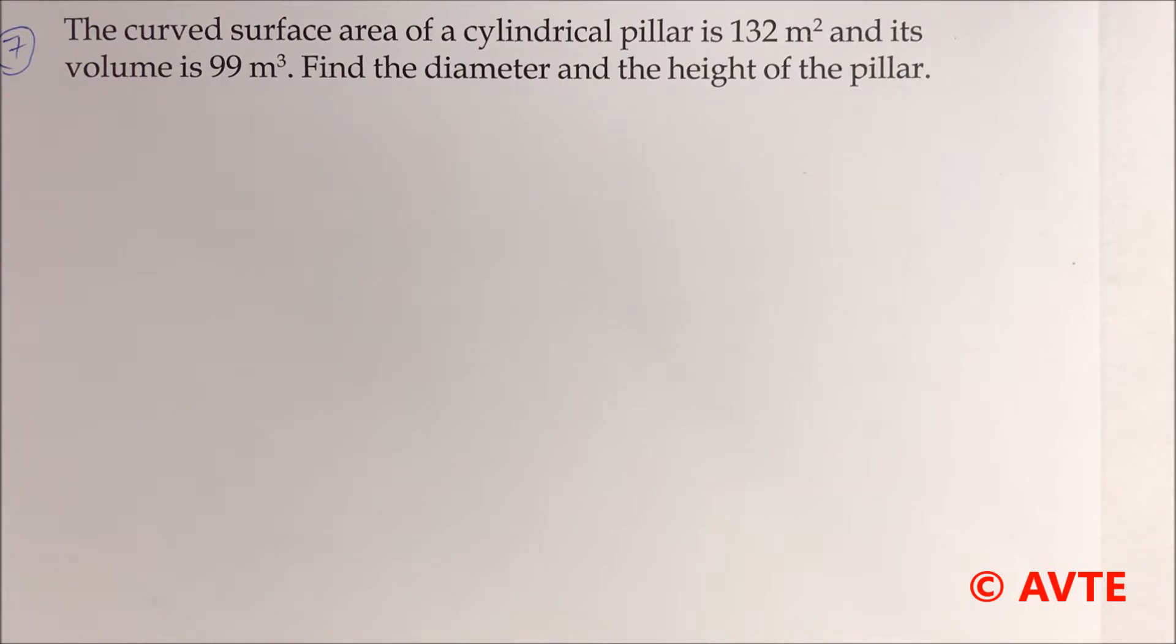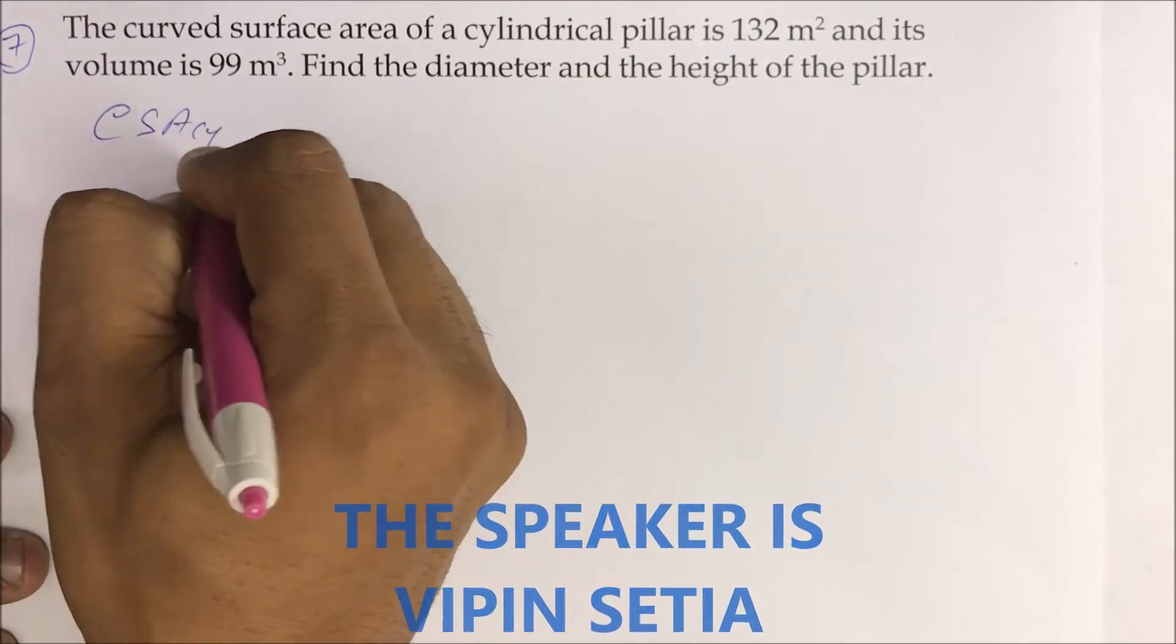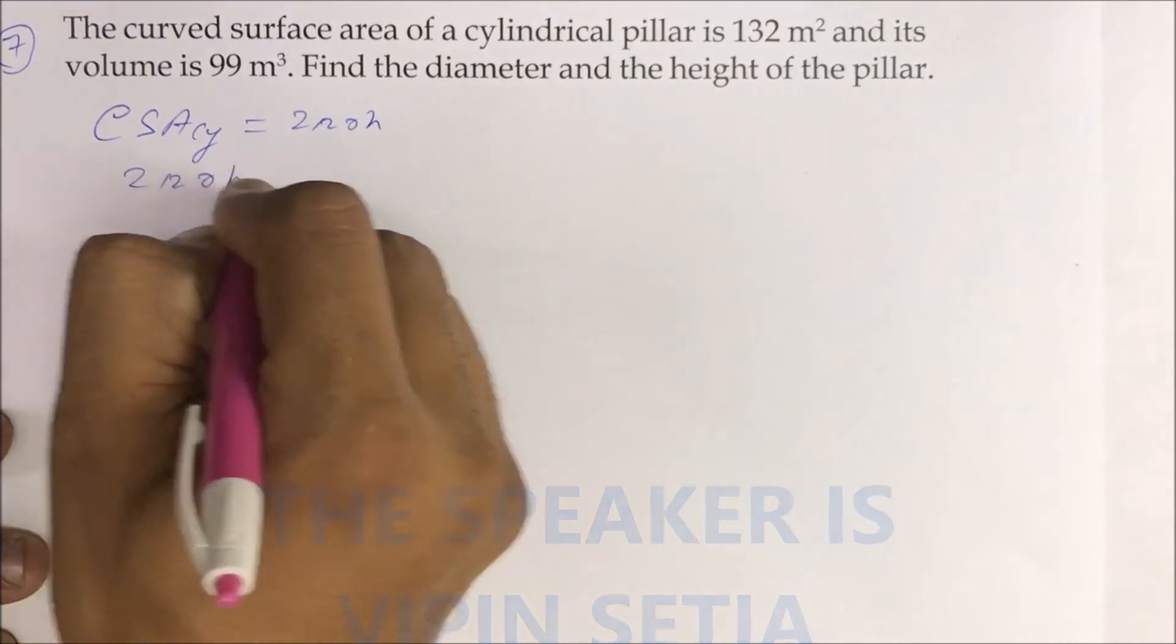The curved surface area of a cylindrical pillar is 132 meter square and its volume is 99 meter cube. Find the diameter and the height of the pillar. The CSA of the cylinder is 2πrh, which is given as 132.